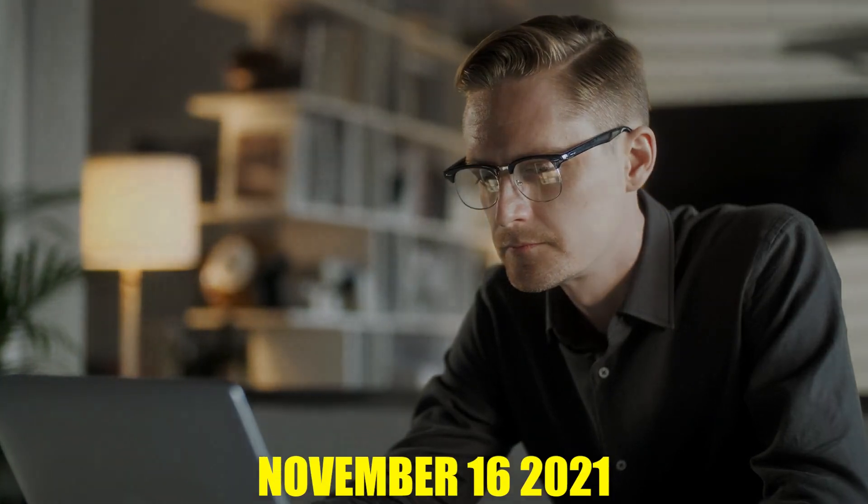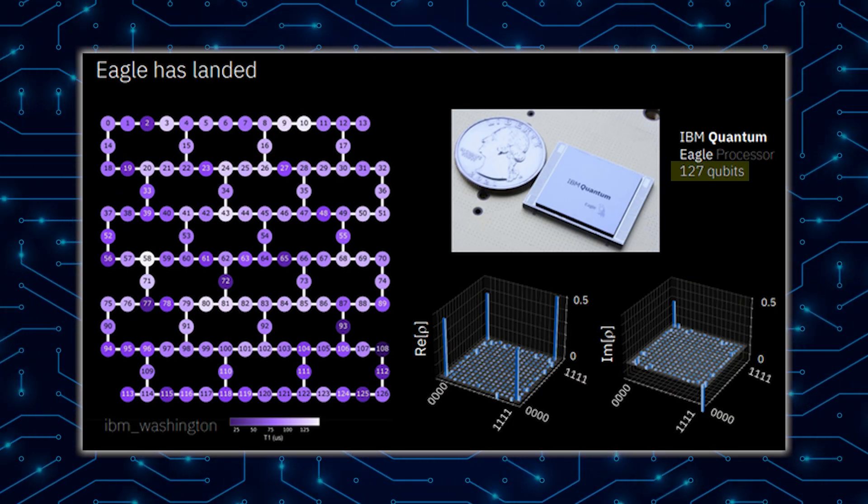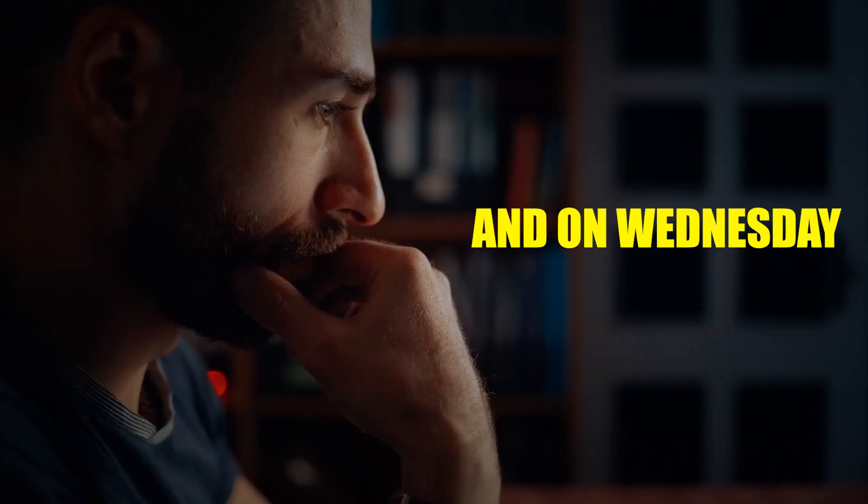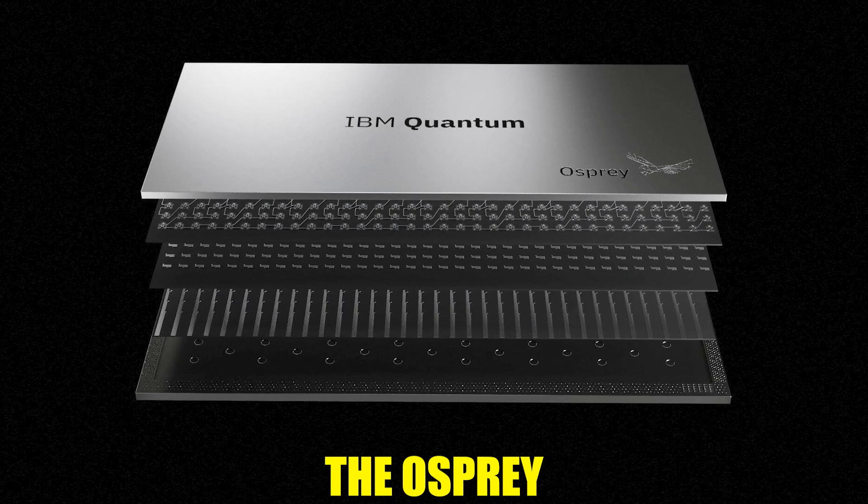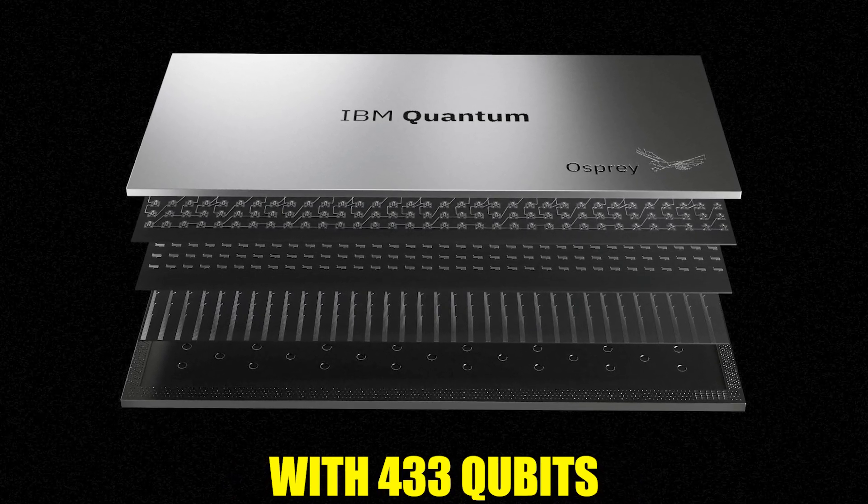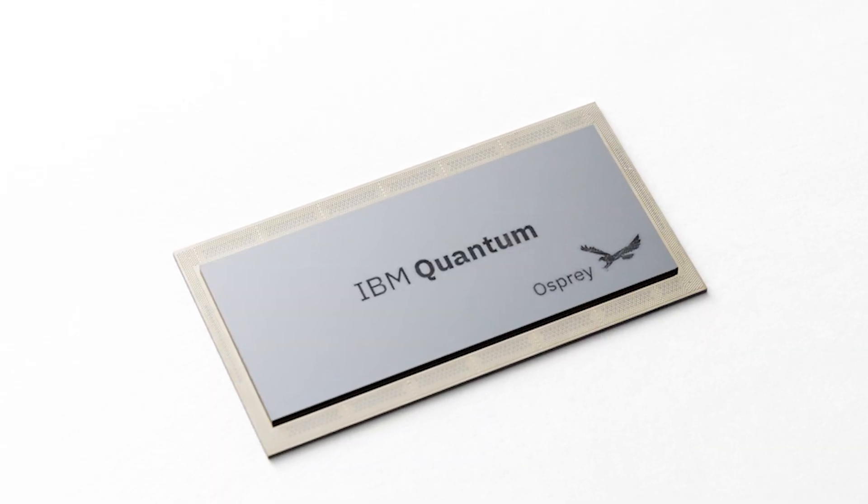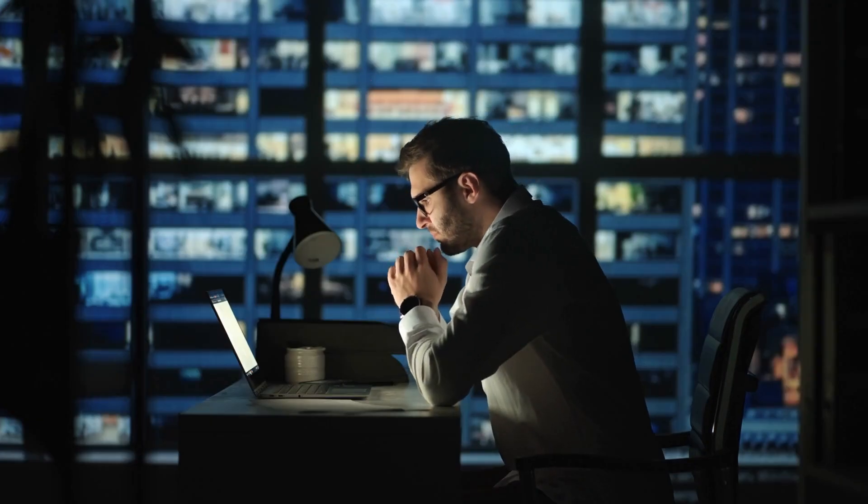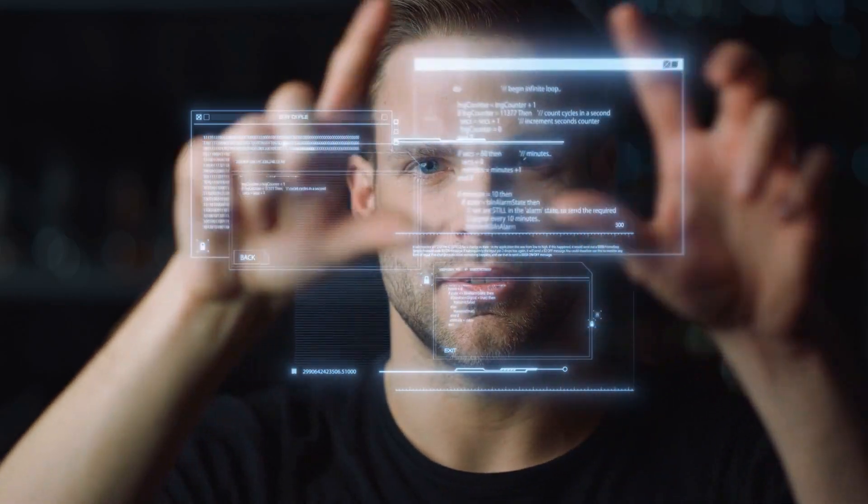On November 16, 2021, IBM released its 127-qubit quantum computer Eagle, and on Wednesday, November 9, 2022, IBM released the Osprey, a superconducting quantum computer with 433 qubits. The Osprey is the most powerful quantum computer as of now. But this achievement doesn't yet mean that IBM has achieved quantum supremacy, but it is an important step forward in the development of technology.